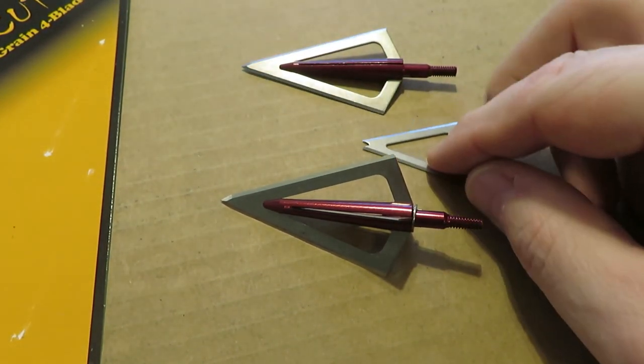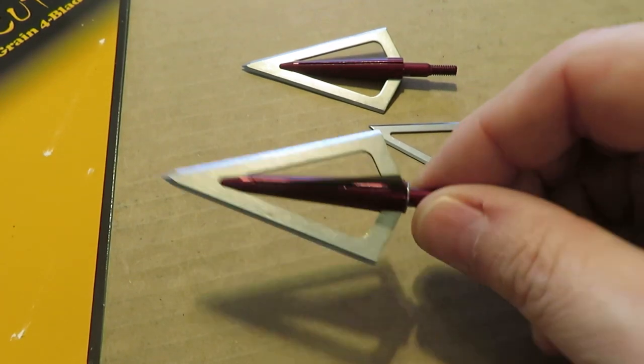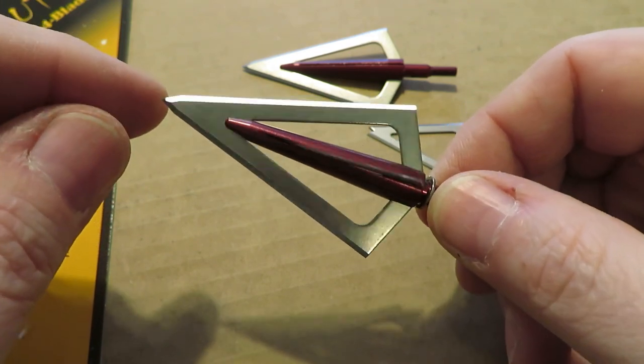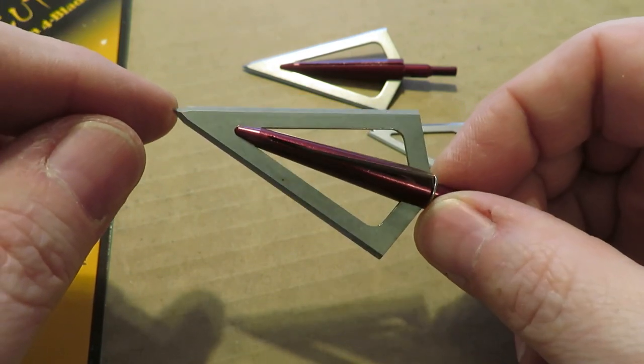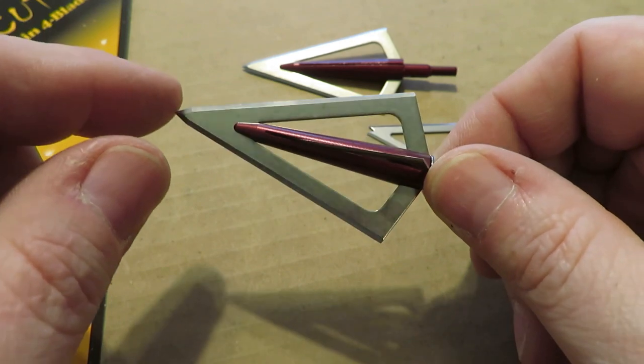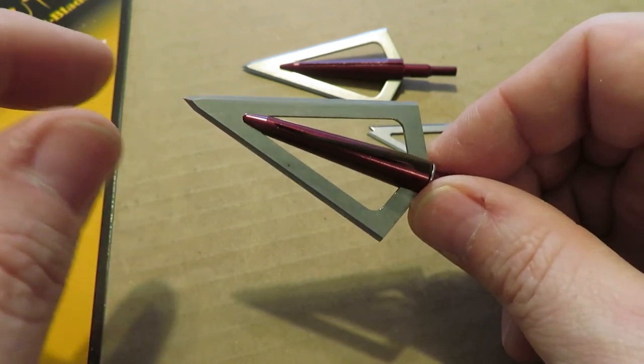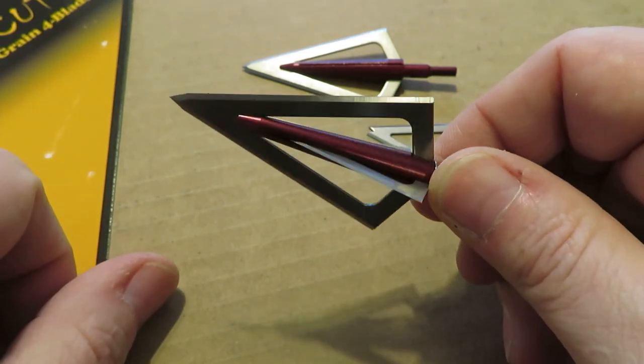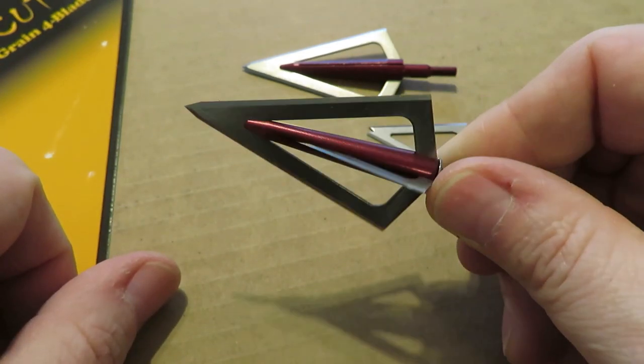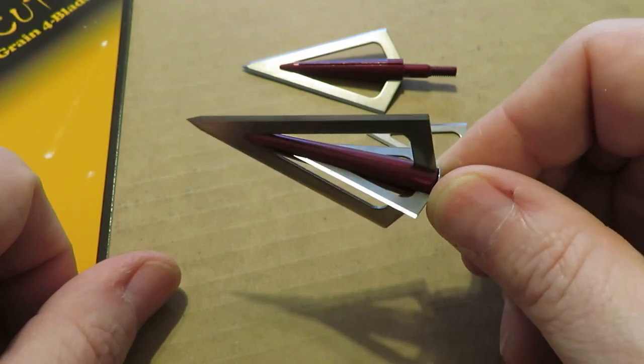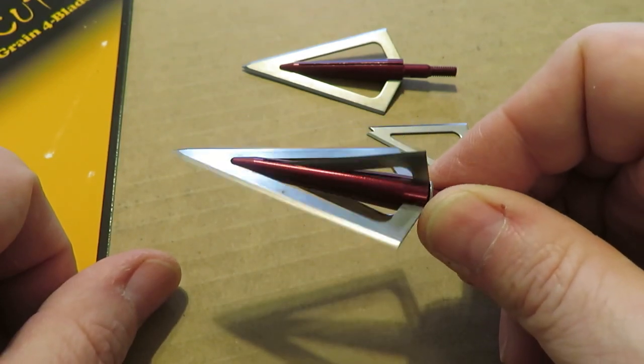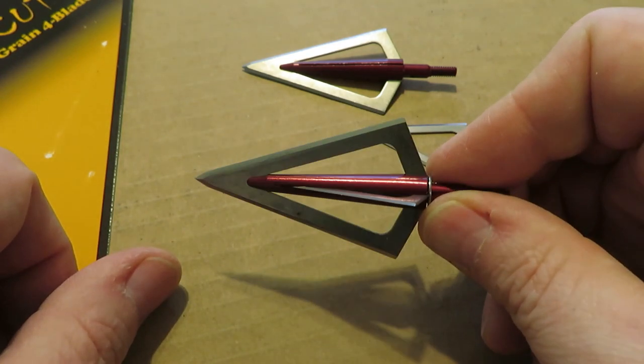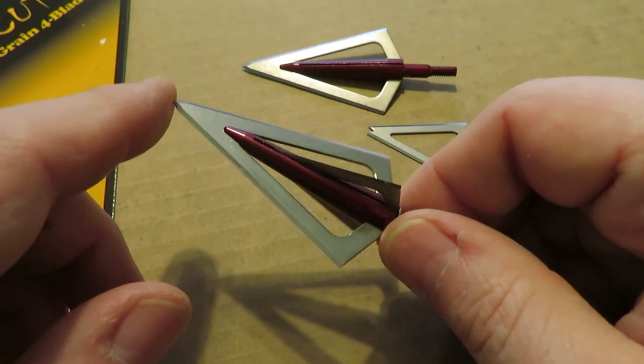Like the Muzzy Phantom, the bleeder blades do come out and will be sharpened separately. I've had success with this head because I killed so many deer with Muzzy Phantoms. I was sad to see them go, but as soon as I learned about these I picked up four three-packs. Then I went on to kill a couple of antlered deer and the holes that these things blow are amazing.